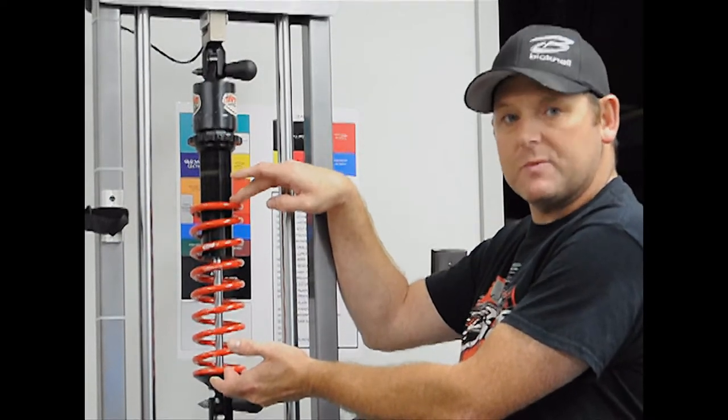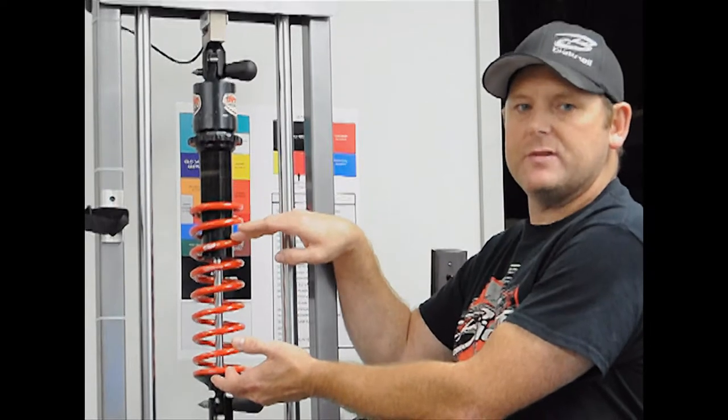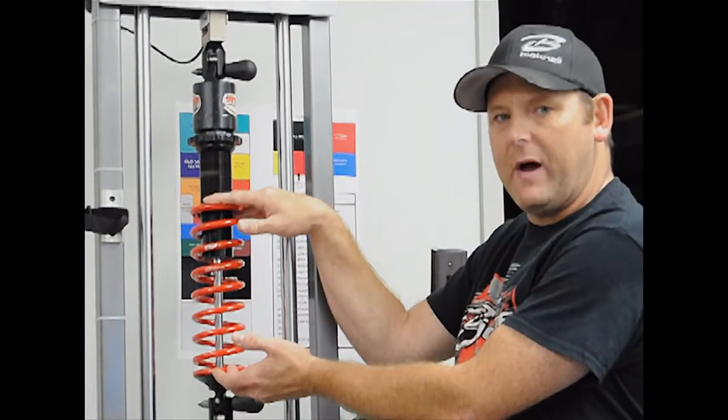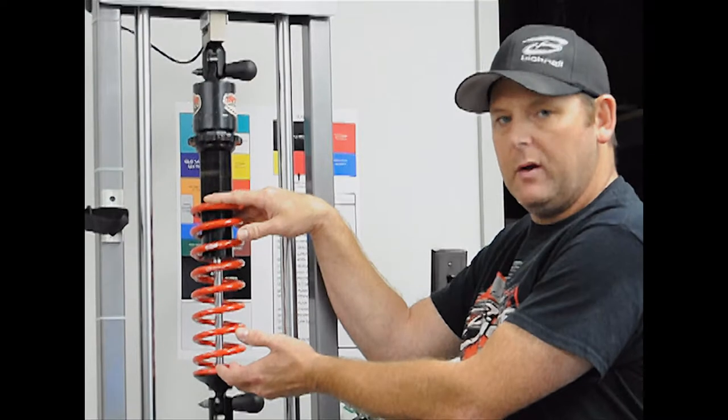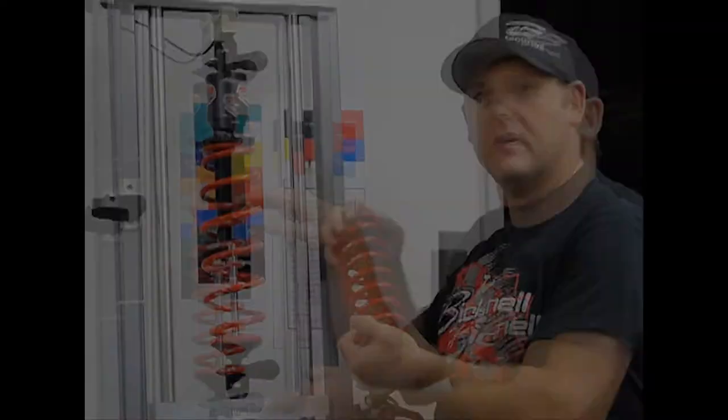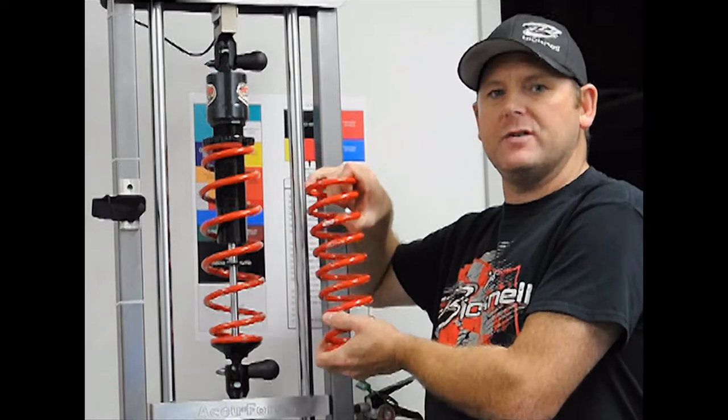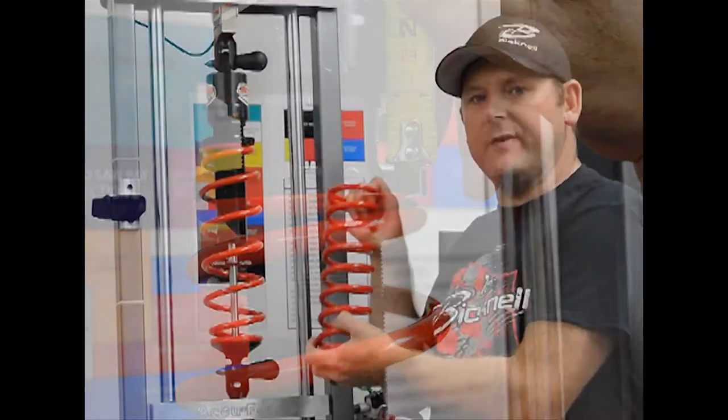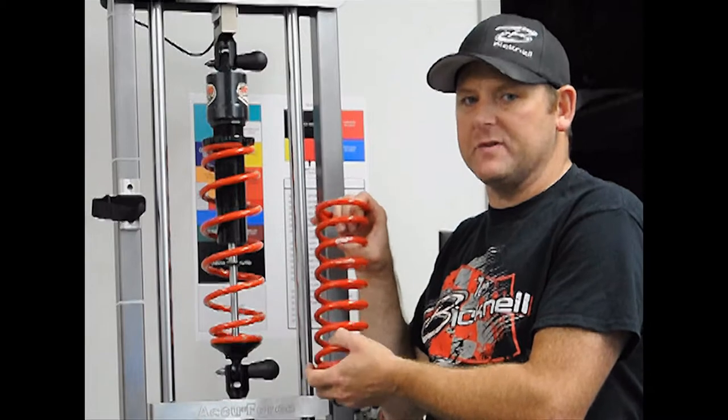To make this spring from 10 inches to 9 inches, I need to put 150 pounds of weight on this spring. That's what the rate actually signifies. If that spring is compressed to 9 inches and it's a 10 inch spring and it says 150 pounds, that is a 150 pound spring.